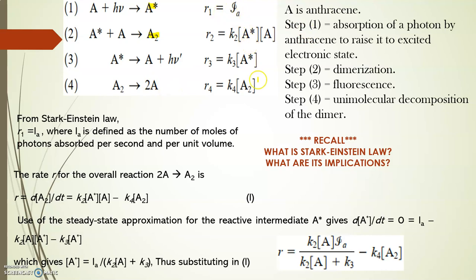The rate constant for each step is shown here. Here R1 is equal to IA. What is IA? IA is defined as the number of moles of photons absorbed per second per unit volume. This is based on Stark-Einstein's law. You have already gone through what is Stark-Einstein's law. Now it's time to recall what is Stark-Einstein's law and what are its implications.